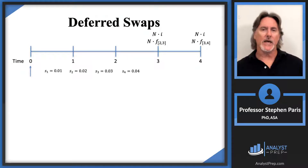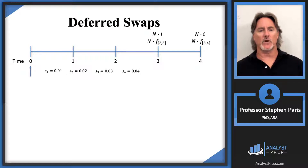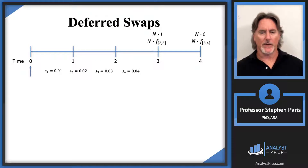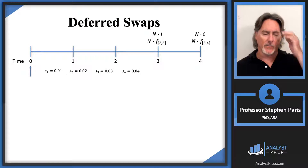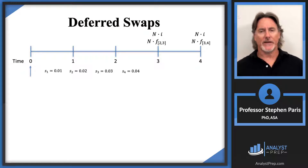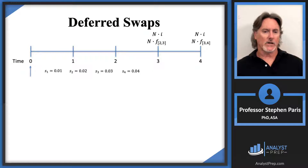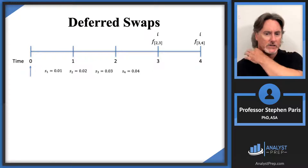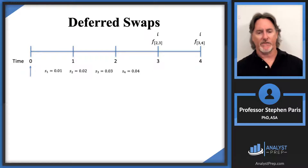With level notional amounts, as shown in a previous video, the swap rate will not depend on what that level notional amount is — that's why the problem didn't specify it. When I solve for i in my equation, it won't depend on the notional amount, so I may as well assume a notional amount of one and take it out.